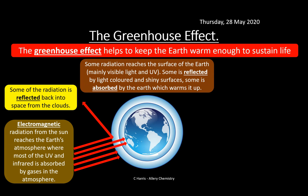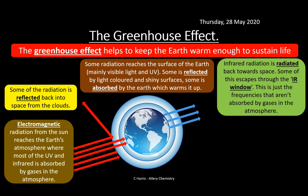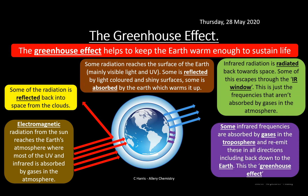Infrared radiation is radiated back towards space. Some of it escapes through what's called the infrared window — these are the frequencies not absorbed by gases in the atmosphere. Some of this heat escapes particularly during night time, when wherever you live is turned away from the sun and the earth cools. However, some of the infrared frequencies are absorbed by gases in the troposphere, and these re-emit the radiation in all directions — including back down to earth. This is the greenhouse effect.